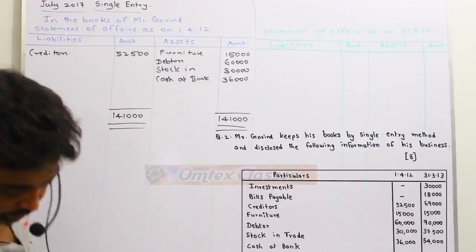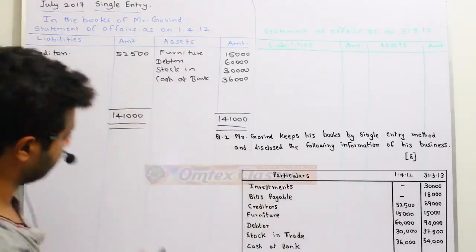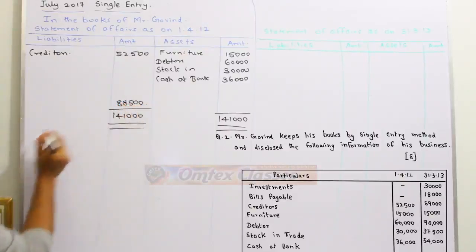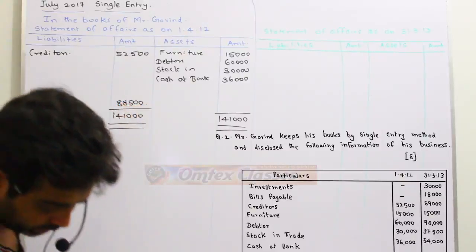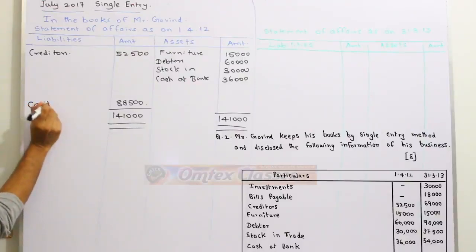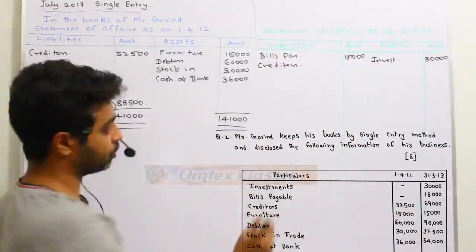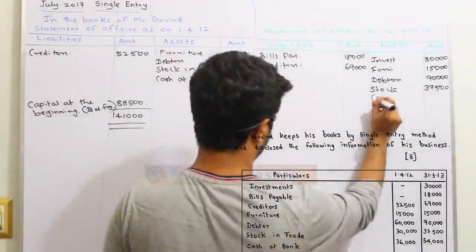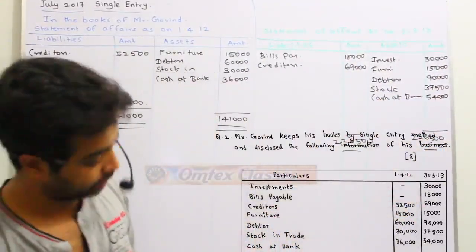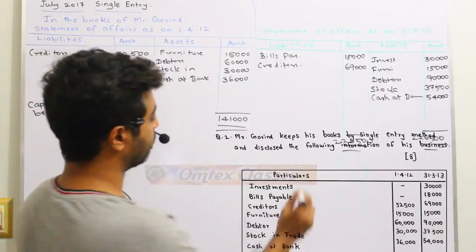If we minus $52,500, then it will come to $88,500. So $88,500 is our capital at the beginning of the year. If we have minus $18,000 and $69,000, then we will get $1,39,500.